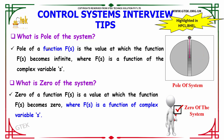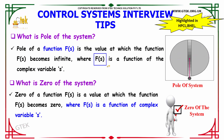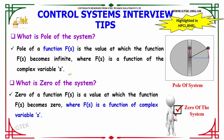What is the pole of a system? The pole of a function F(s) is a value at which the function F(s) becomes infinite, where F(s) is a function of the complex variable s. What is the zero of a system? The zero of a function F(s) is a value at which the function F(s) becomes zero, where F(s) is a function of the complex variable s.